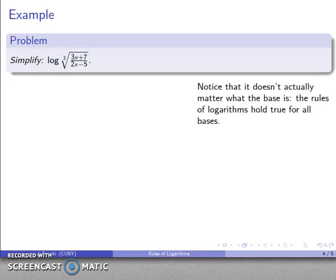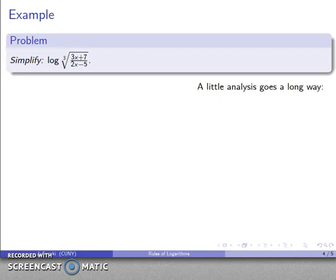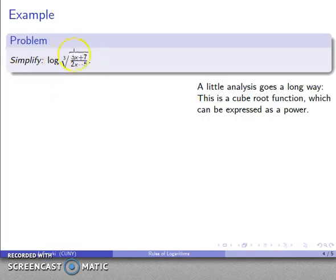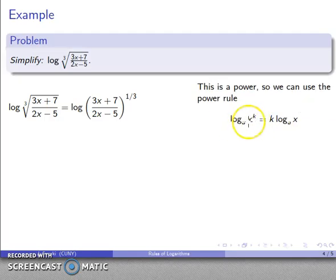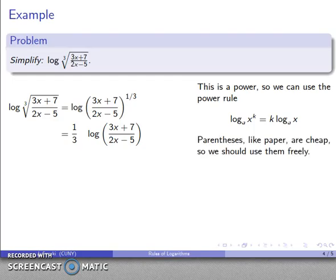Here's another example — the log of a cube root expression. The rules of logarithms hold regardless of the base. A cube root can be expressed as raising to the power one-third. So I have a power and can apply the power rule: the exponent one-third comes out front as a coefficient. That gives one-third times log of (3x+7)/(2x−5). Parentheses are important here because the one-third applies to the entire expression.